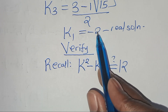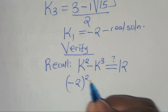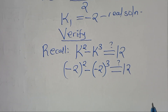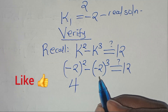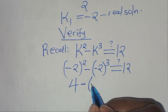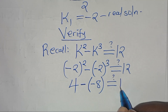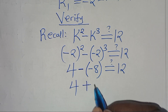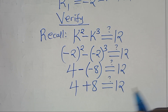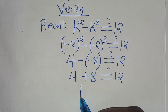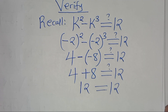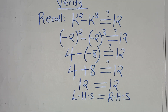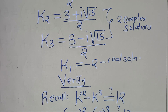Substituting k = minus 2: (−2)² − (−2)³ = 4 − (−8) = 4 + 8 = 12, which equals 12. The left hand side equals the right hand side, confirming that k = minus 2 satisfies the equation.